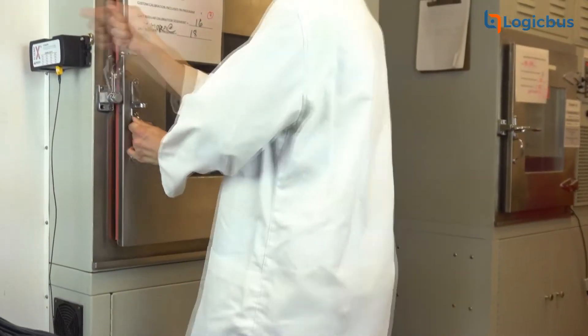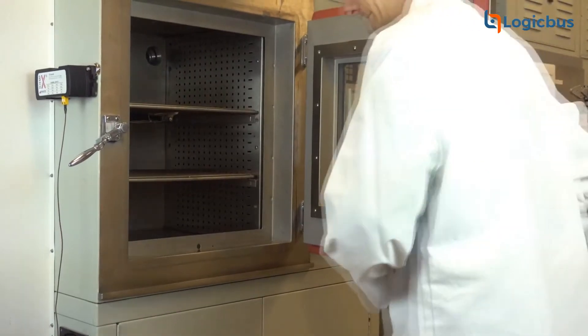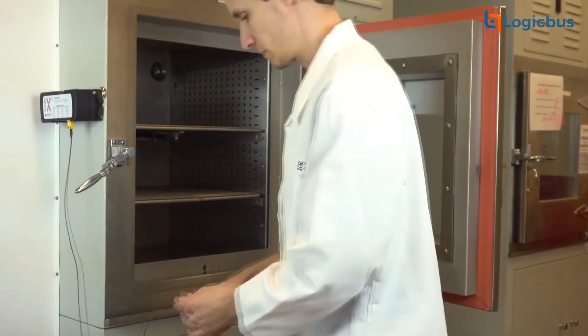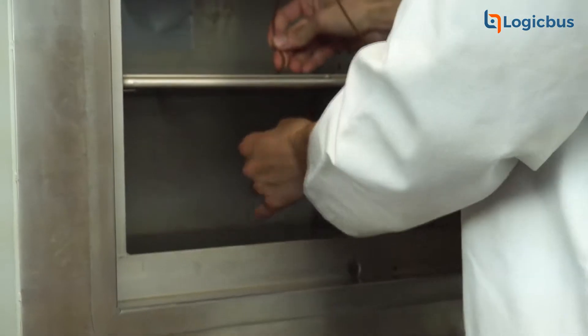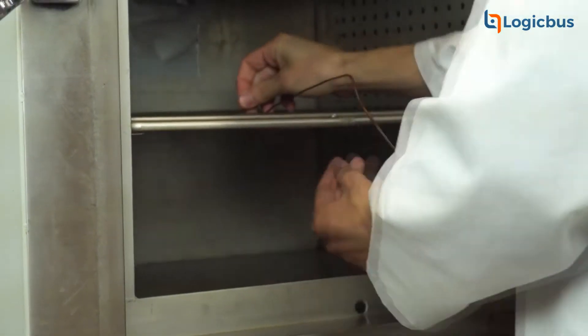During our day-to-day temperature chamber processes, we will be utilizing two shelves, so it's important for us to map both of these shelves, spreading the thermocouples out evenly to catch any hot or cold spots that may be hiding within the chamber.